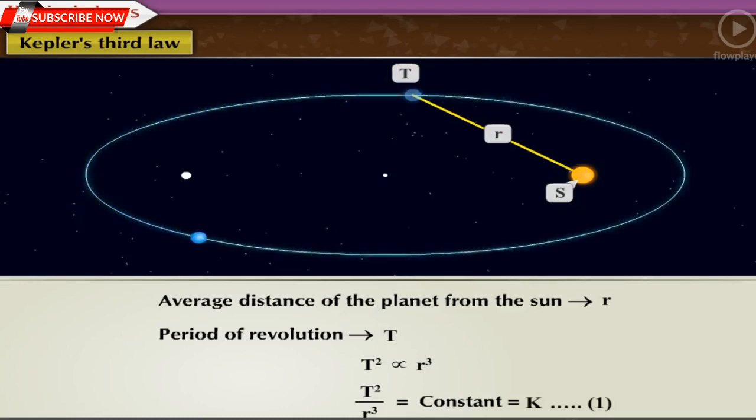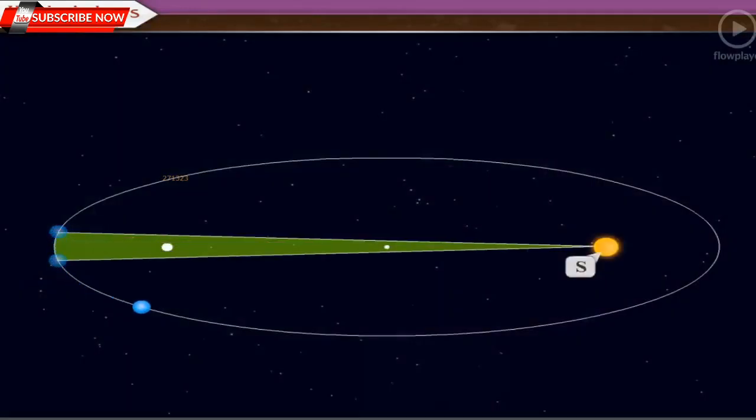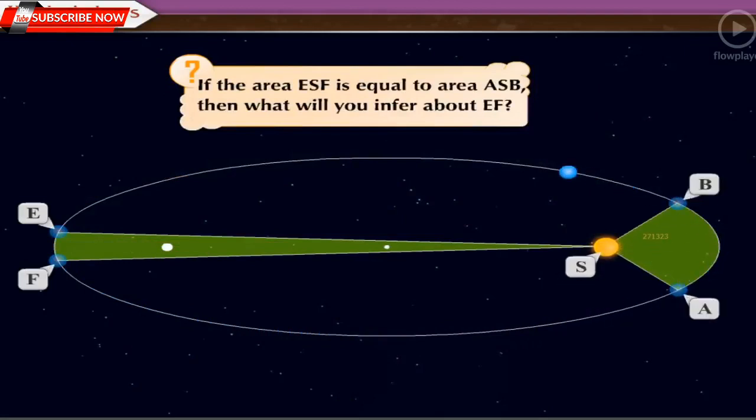After studying about ellipse and Kepler's laws, now it's time for a question-answer session. As shown in the figure, if the area ESF is equal to area ASB, then what will you infer about EF?